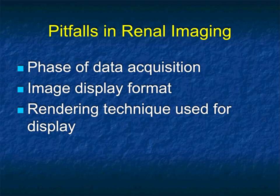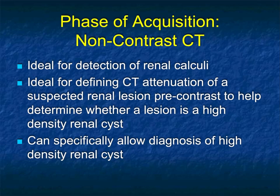Image display format is critical. Looking only at the axials, you can overlook tumors, especially at the upper and lower pole of the kidney. Coronals are a must, and sagittals are pretty helpful as well. Using 3D imaging in the kidney is very valuable, particularly for looking at the calyces for transitional cell carcinoma as well as for looking at the ureter.